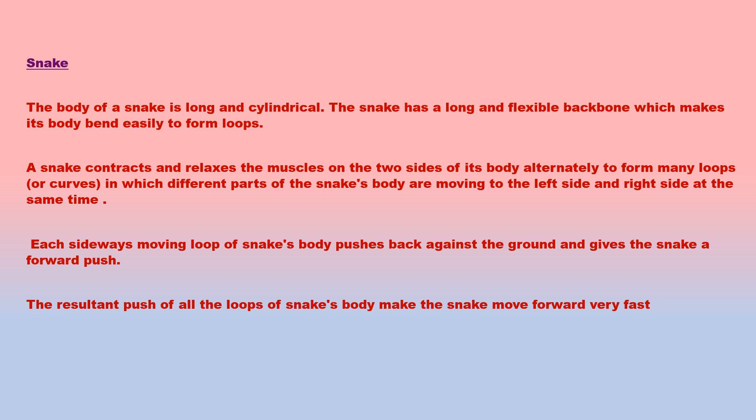The snake has a long, cylindrical body with a long and flexible backbone that allows its body to bend easily into loops or curves, and strong muscles connected to its skeleton. Although snakes do not have legs, they move quite fast. A snake moves forward by moving its body sideways in the form of many loops, pushing against the ground with the underside of the moving loops. The snake contracts and relaxes muscles on both sides alternately, and each sideways-moving loop pushes back against the ground, propelling the snake forward.